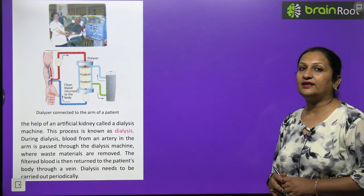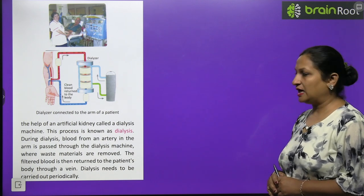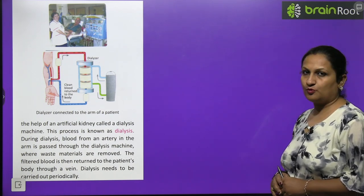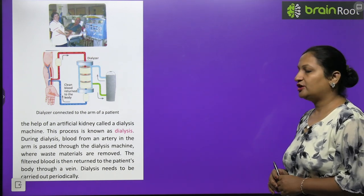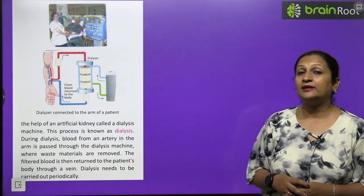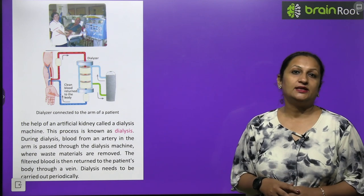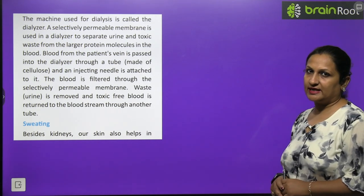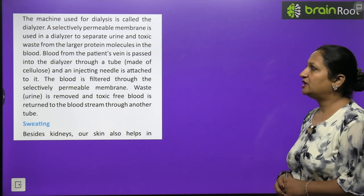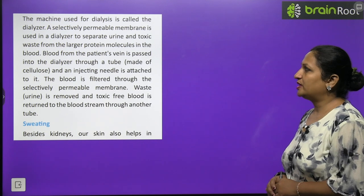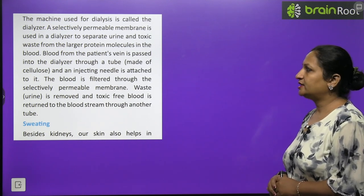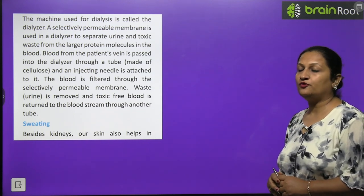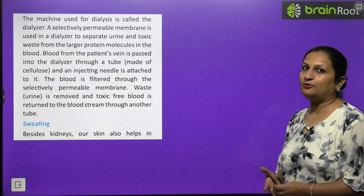The dialysis machine is referred to as an artificial kidney. During dialysis, blood from an artery in the arm is passed through the dialysis machine where waste materials are removed. Filtered blood is then returned to the patient's body through a vein. Dialysis needs to be carried out periodically. A selectively permeable membrane in the dialyzer separates urine and toxic material from larger protein molecules in the blood. The toxic-free blood is then returned to the body through another tube.